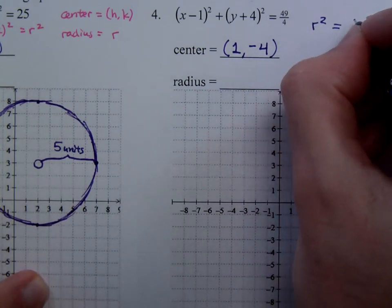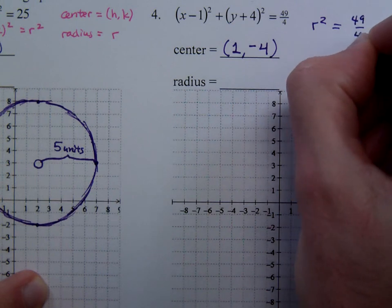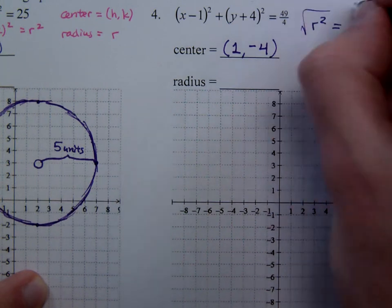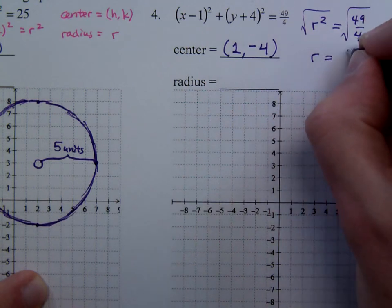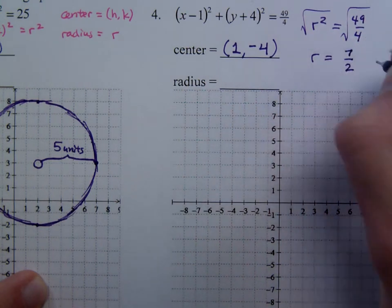Now, r squared is 49 over 4. So if I take the square root of both sides here, you find that r is 7 halves.